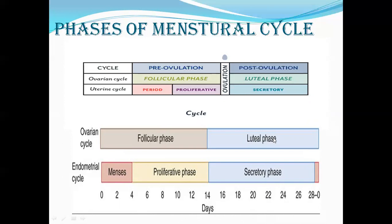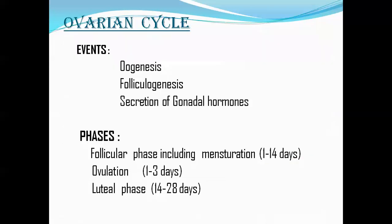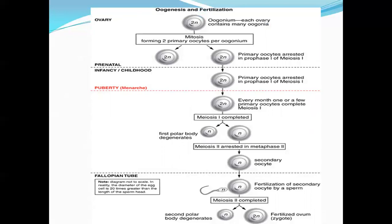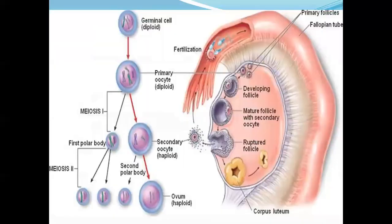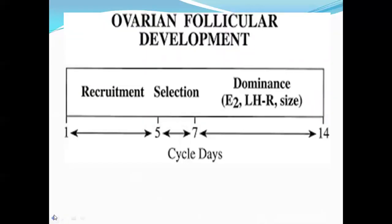Coming to the ovarian cycle, the events occurring in the ovary are oogenesis — the development, maturation, and growth of a mature ovum from oogonia — then folliculogenesis, where follicles develop around the ovum (the main hormone-secreting organ of the ovary), and secretion of gonadal hormones from these follicles. The phases are the follicular phase, ovulation, and the luteal phase.